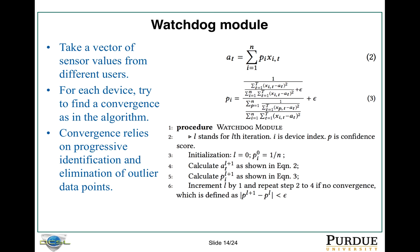For the watchdog module, it takes a vector of sensor values from different users and calculates the average of the sensor values. Then, for each device, it calculates the confidence score, and after several iterations, tries to find convergence. The convergence basically relies on progressive identification and elimination of outlier data points.